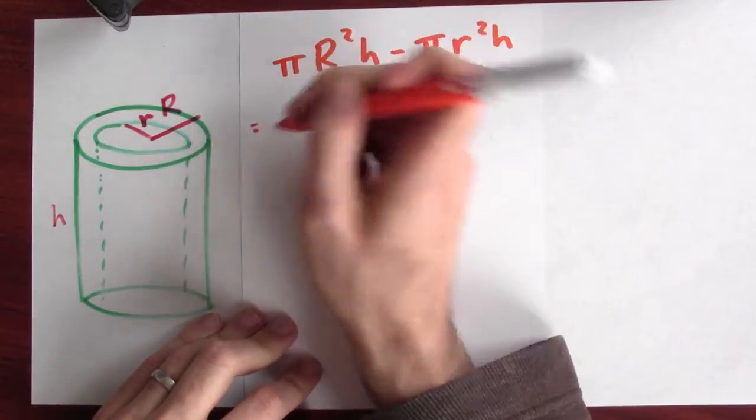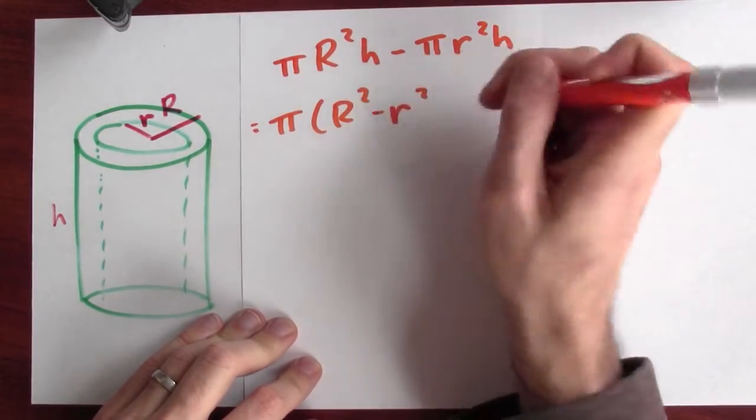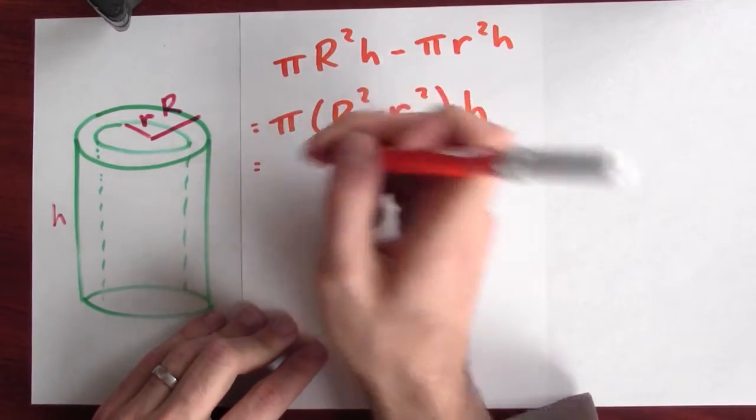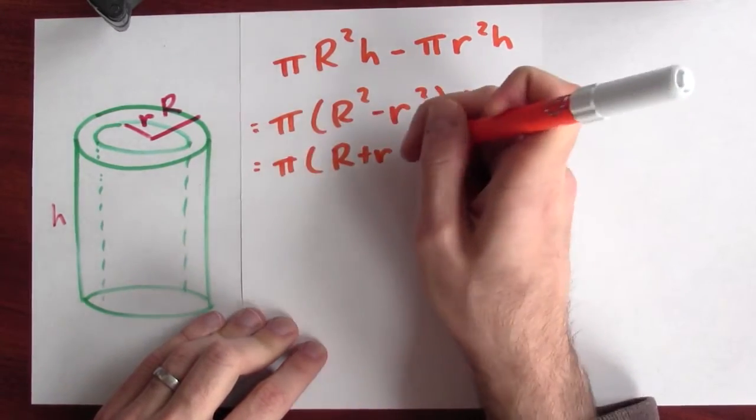Well, let's rewrite this volume anyhow. I'm going to factor this out. π big R² minus little r² h. Now let's rewrite this. This is a difference of squares. So I can write that as π big R plus little r times big R minus little r times h.